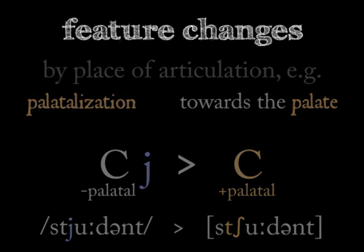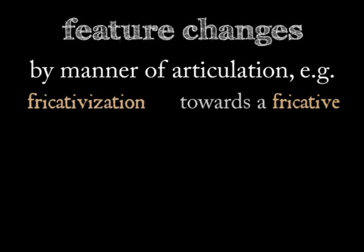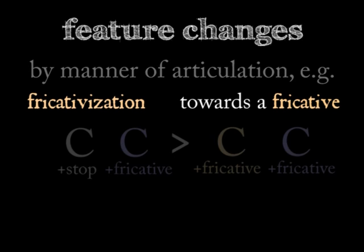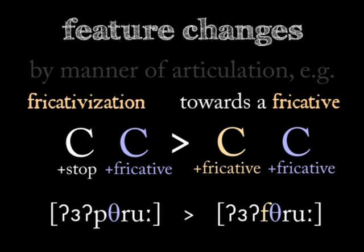Does the assimilating sound change its manner of articulation so that airflow is closer to a fricative? This is fricativization, and less restricted sounds — including fricatives and vowels — trigger this kind of change. Stops often undergo this assimilation. I've both heard and said the mispronunciation 'up through' for 'up through' — that pronunciation fricativizes the plosive P as it assimilates to the fricative TH.